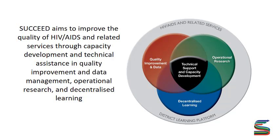On the outside, the gray area indicates the platform where we're working at Succeed. We're working at HIV-related services as well as the distributed platform. In general, the aim is to improve the quality of HIV-related services through capacity development and technical assistance in quality improvement and data management, operational research, and decentralized learning.